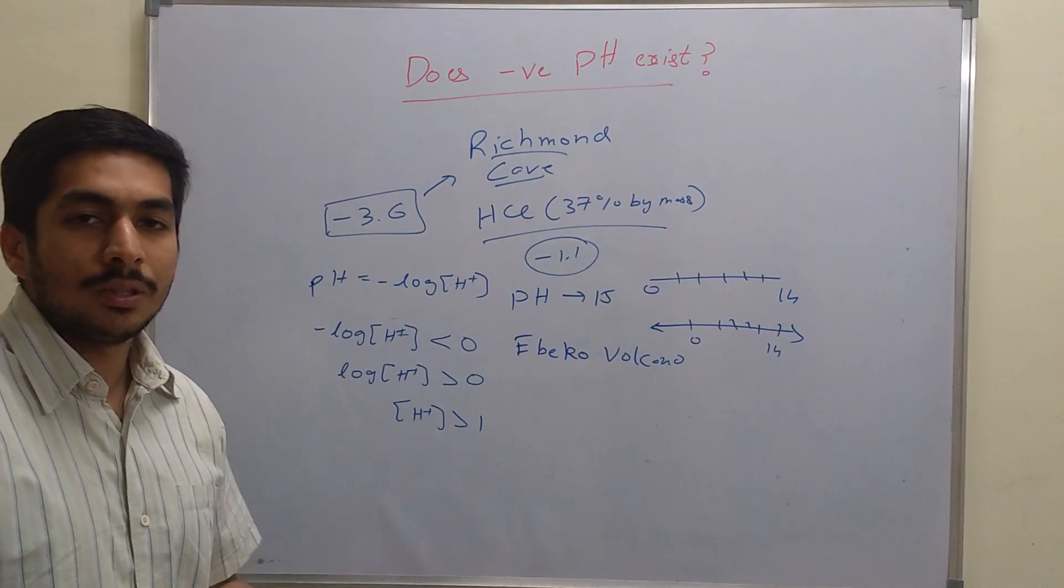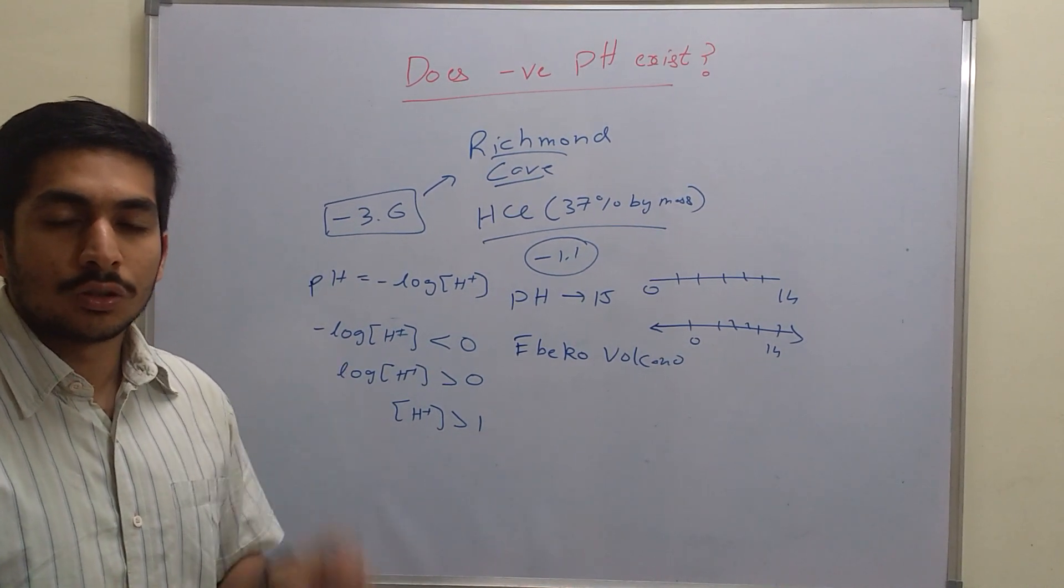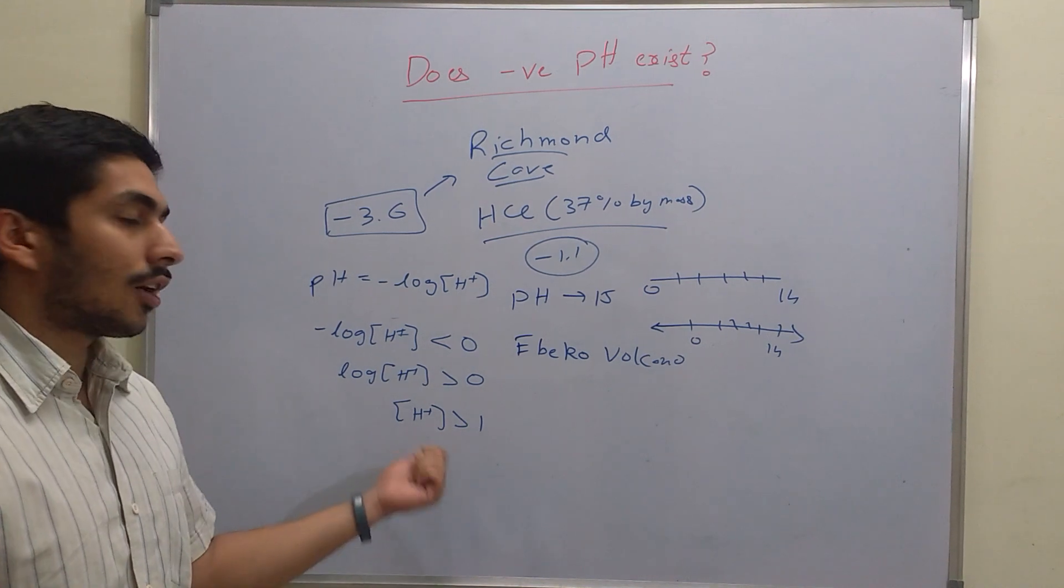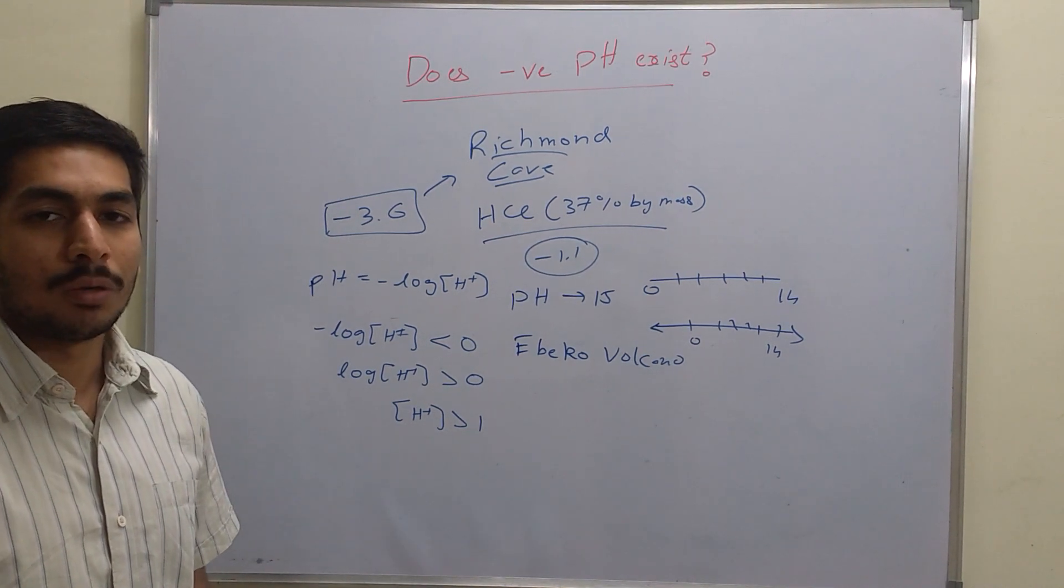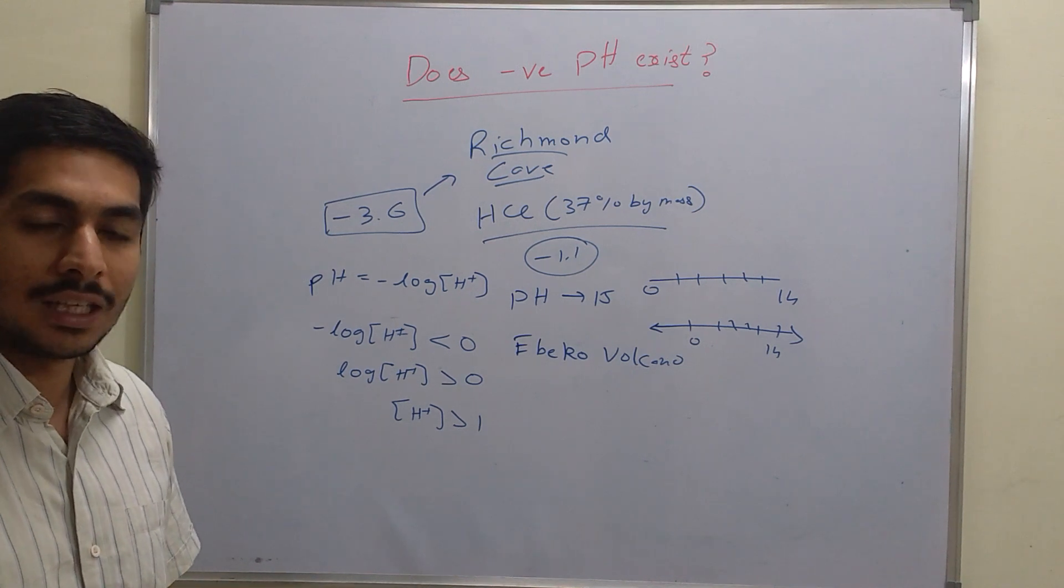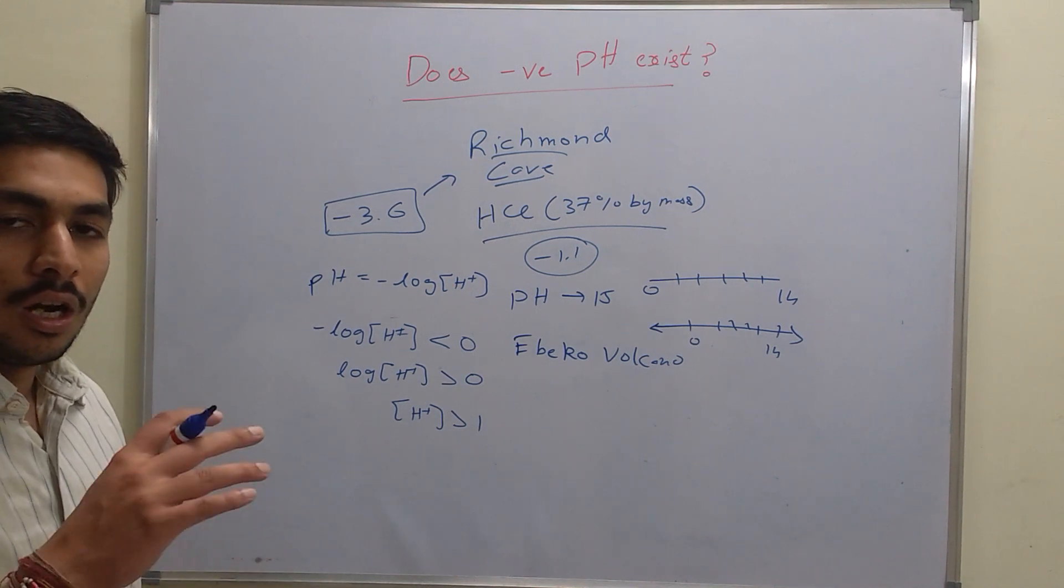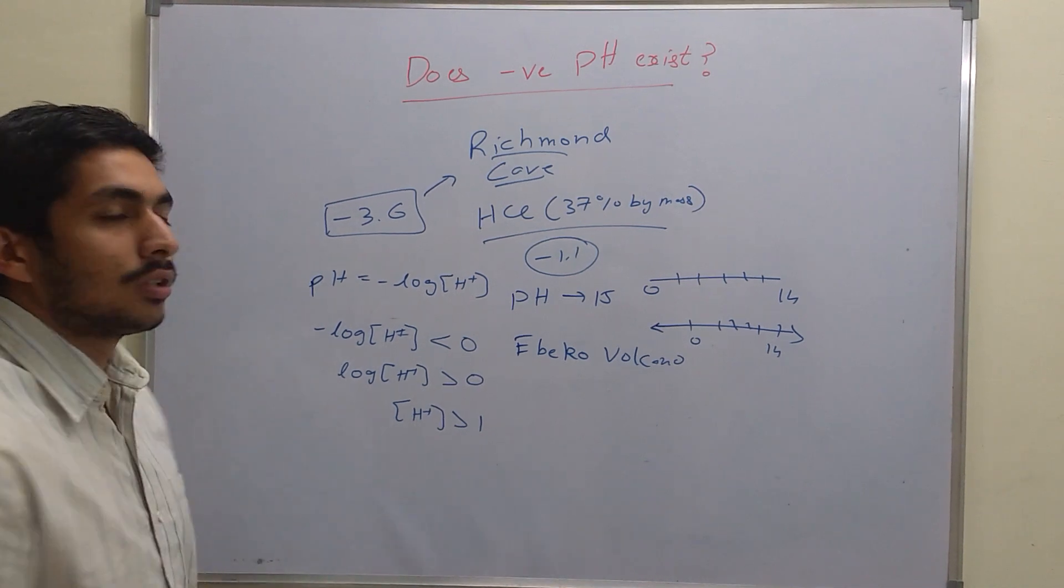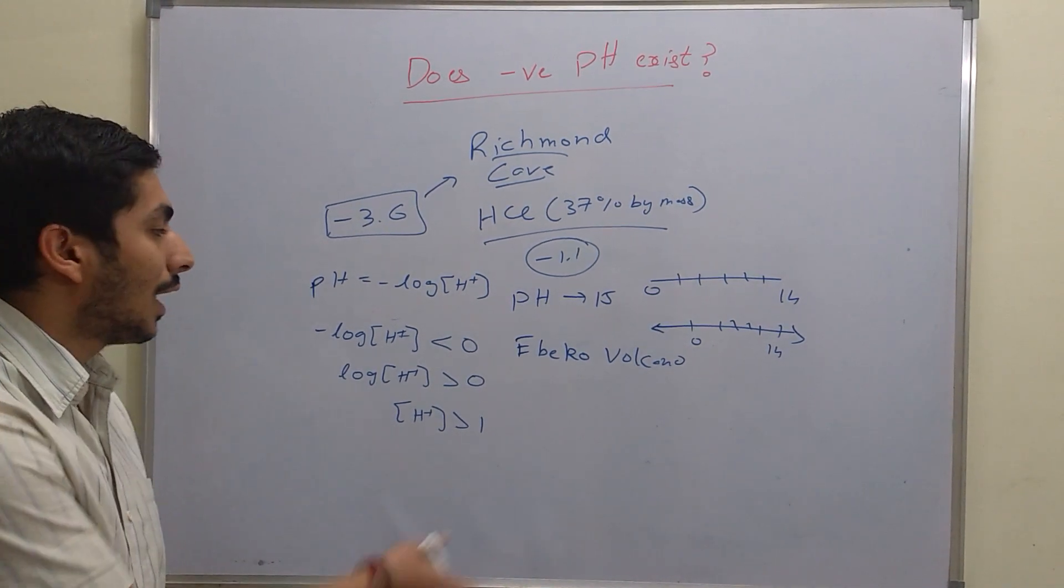That means if you have 3 moles of HCl dissolved in 1 mole of water, then the H plus concentration is going to be greater than 1, because HCl almost completely dissociates into H plus and Cl minus. So if you have 3 moles of HCl in 1 mole of water, obviously the concentration of H plus is going to be greater than 1, and then you can have a negative pH.